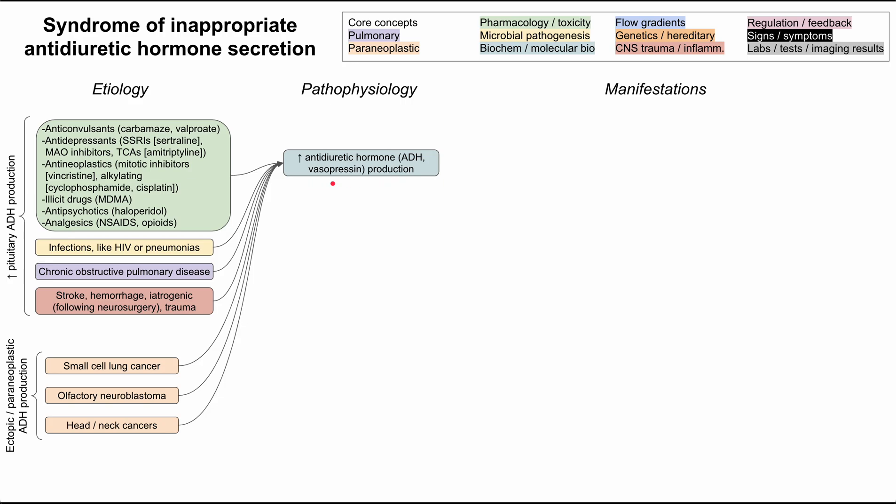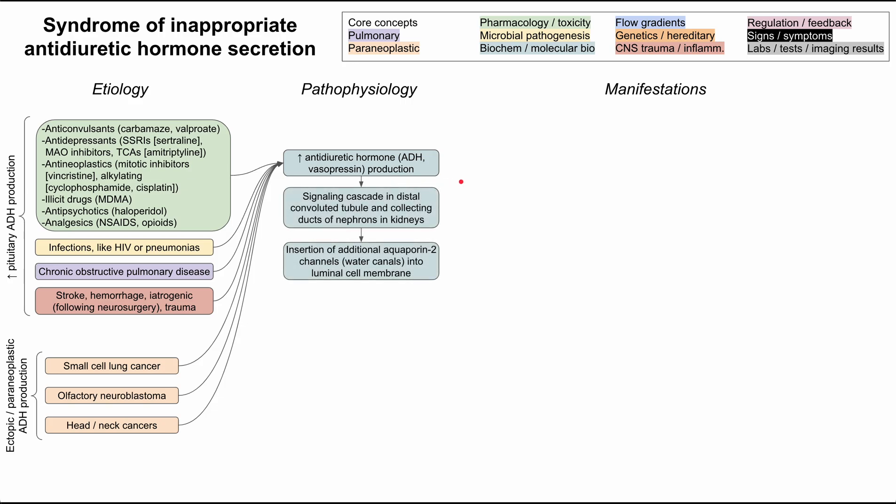All of these increase ADH production, which starts a signaling cascade in the distal convoluted tubule and collecting ducts of the nephrons in the kidneys. This results in the insertion of additional aquaporin-2 channels in the luminal cell membrane. These aquaporin-2 channels are water channels that allow water to flow from the urine into the rest of the body — drawing water from the tubules into the kidney tissue.